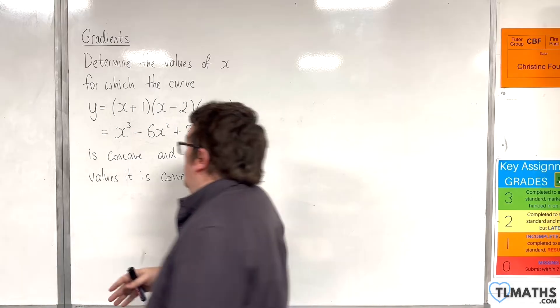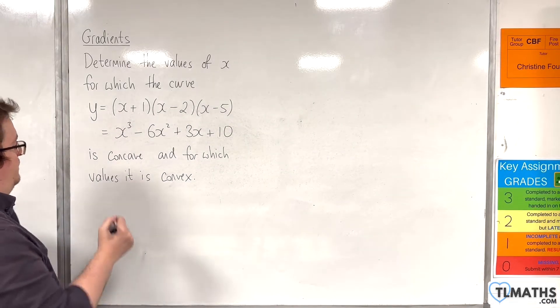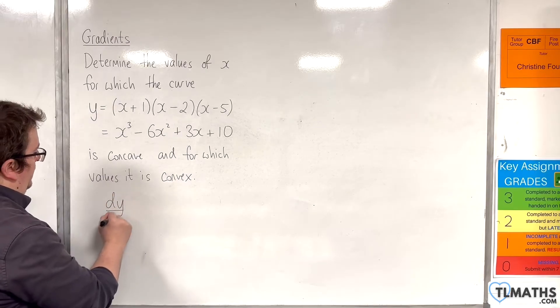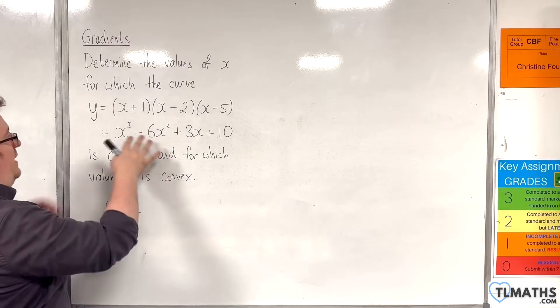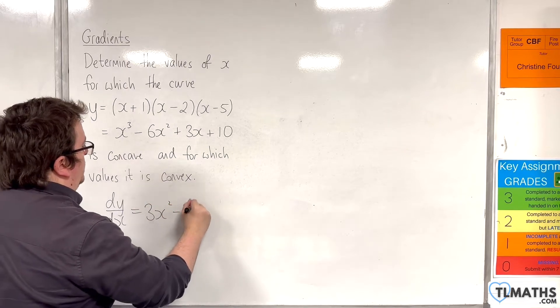So, first thing that we need to do is find dy/dx and d²y/dx². So, dy/dx, differentiating the expanded form, is 3x² - 12x + 3,